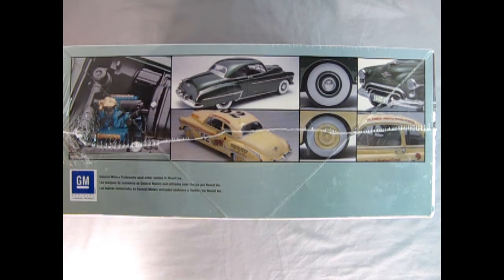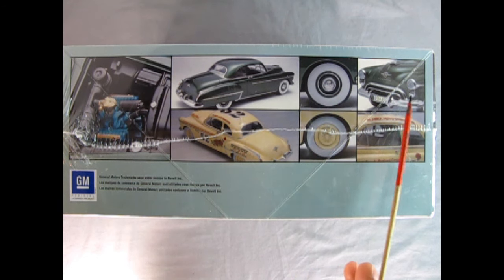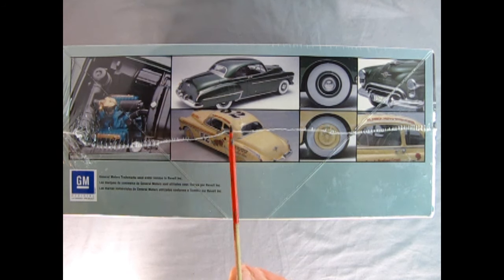On this side of the box we can see the wonderful details such as the Oldsmobile Rocket Motor and the stock version up here in the green with the stock hubcaps and the front end. And then down here is the Mexican Pan America car in the desert tan color, number 52 with the roses for the decals up the side.